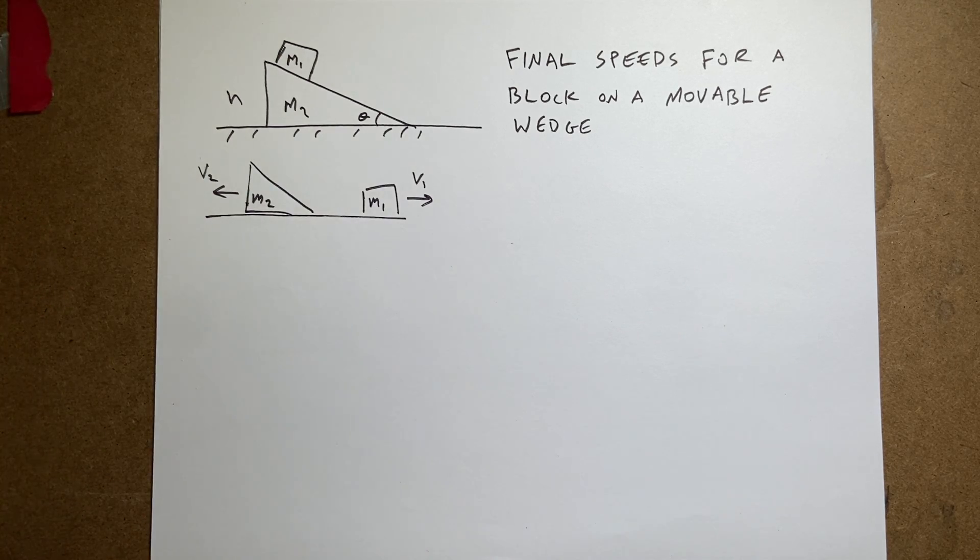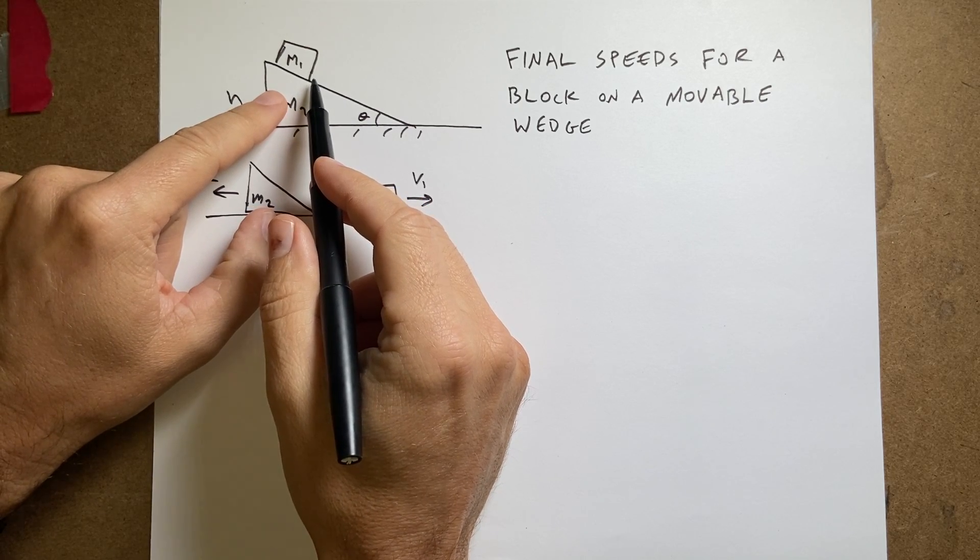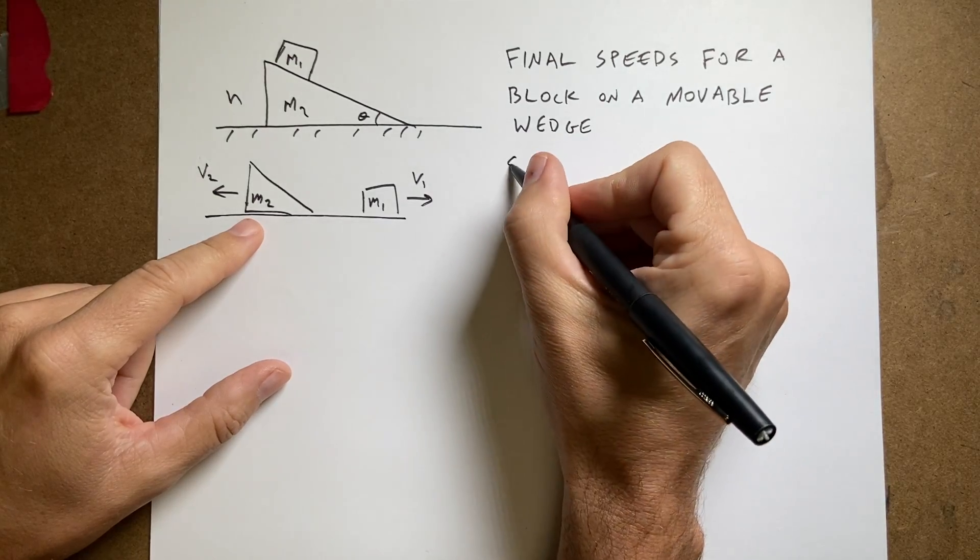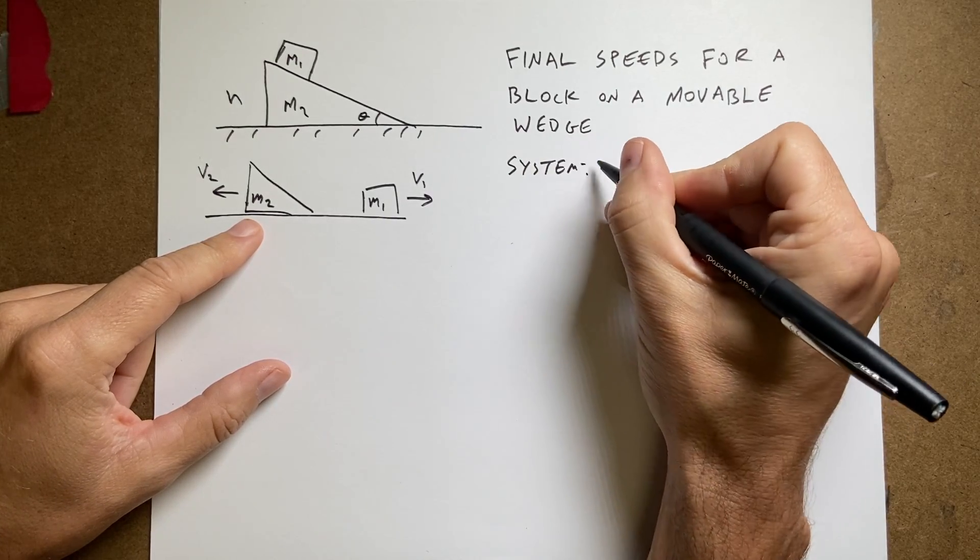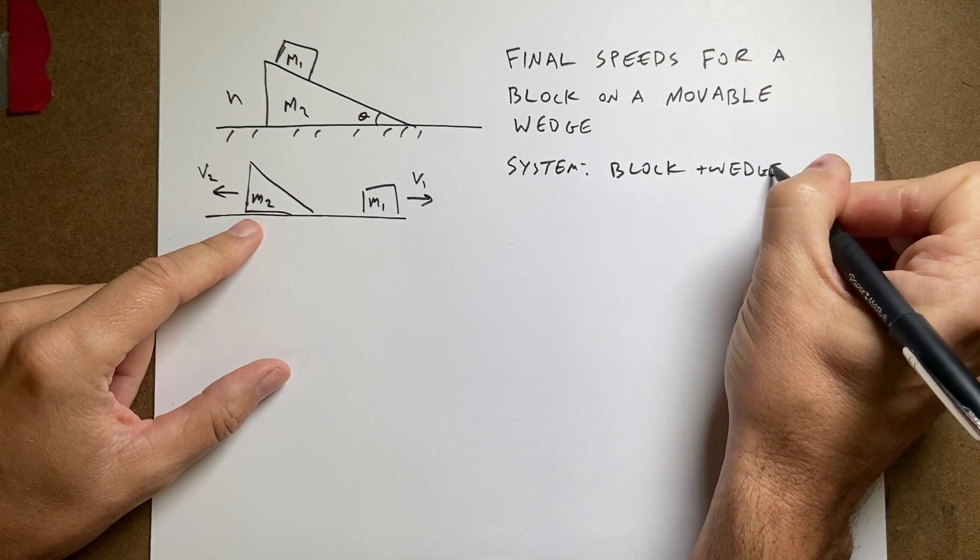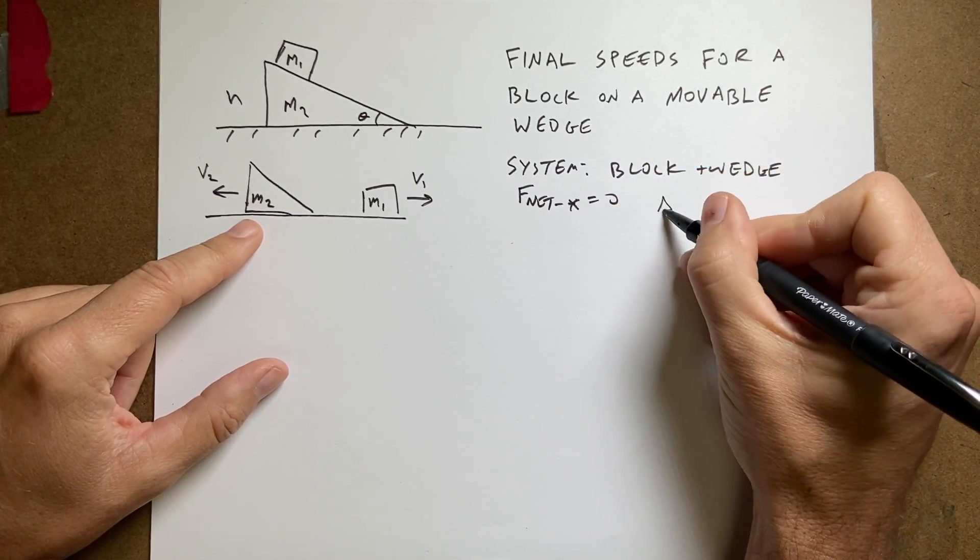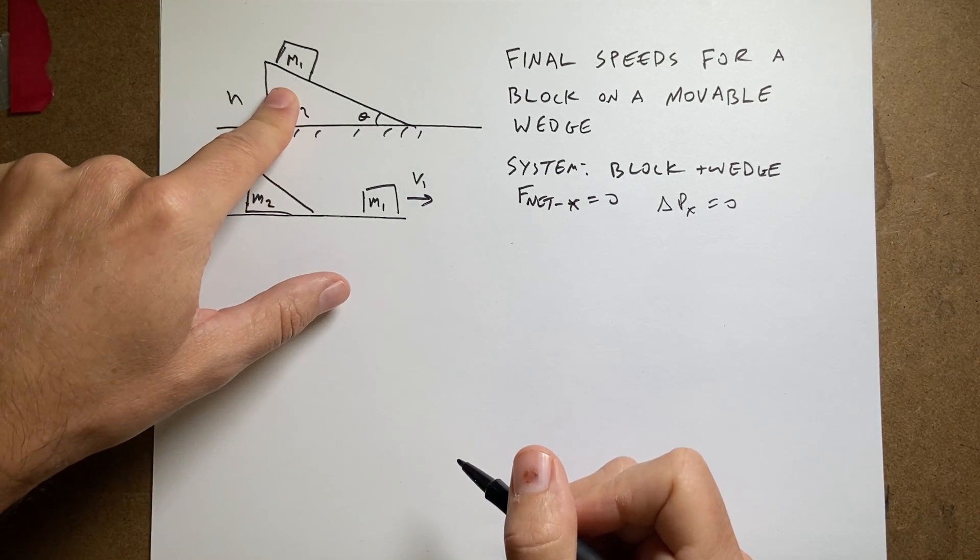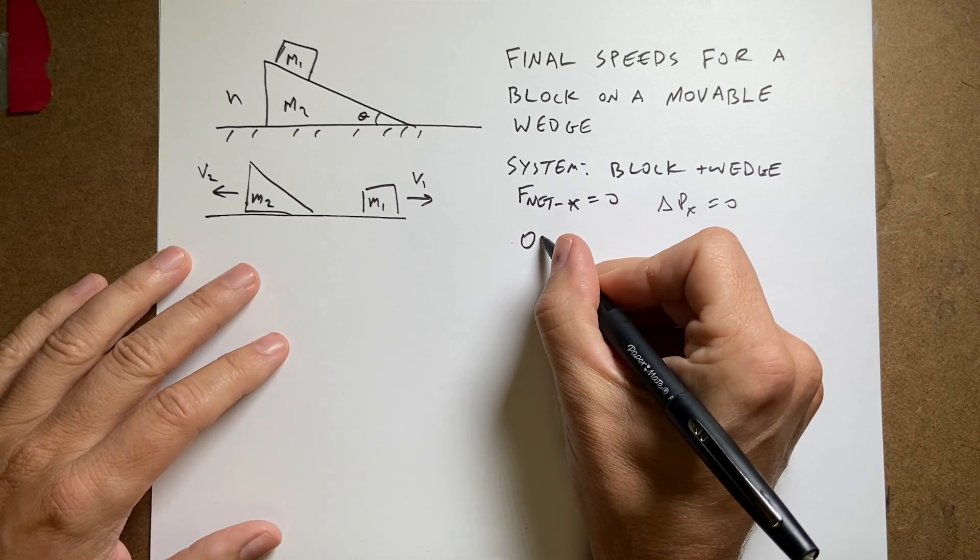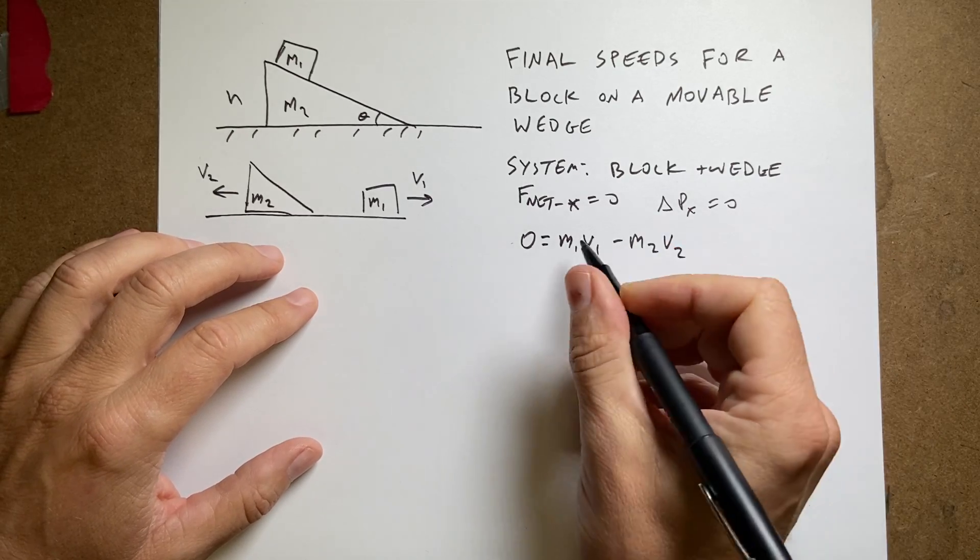And let's just do it. If you think about this, the first thing that I think of seeing this is that up here, the momentum in the x direction is 0. So over here, the momentum in the x direction is 0. So if I include the system of the block plus the wedge, then F net x external equals 0. That means delta Px equals 0. That means the initial momentum of 0 is equal to the final momentum. So I can write this. Initial momentum of 0 in the x direction is going to be M1 V1 minus M2 V2. So I know that has to be true.